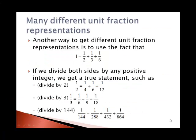Another way to get different unit fraction representations is to use the fact that 1 is equal to 1/2 plus 1/3 plus 1/6. And if we take this fact and divide both sides of it by any positive integer, we get another true statement. So we get that by dividing both sides by 2, 1/2 is equal to 1/4 plus 1/6 plus 1/12. Or if we divide both sides of the original by 3, we get 1/3 is equal to 1/6 plus 1/9 plus 1/18. In doing so, any time we have a fraction, we can change it into the sum of 3 other fractions.